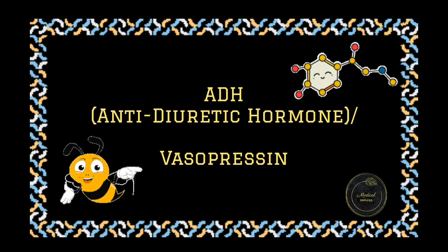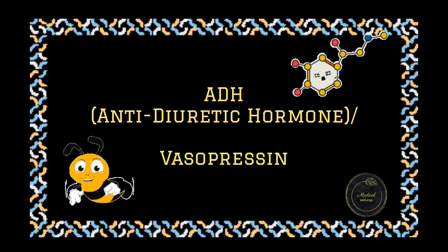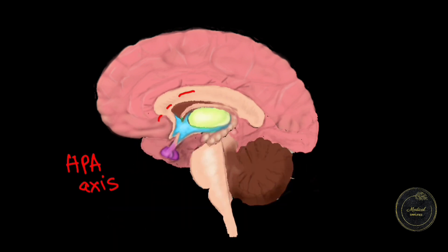So now let's look at ADH, how it is produced, what are its functions and how it affects the osmolality. Anti-diuretic hormone also known as vasopressin is produced in the hypothalamic pituitary axis.